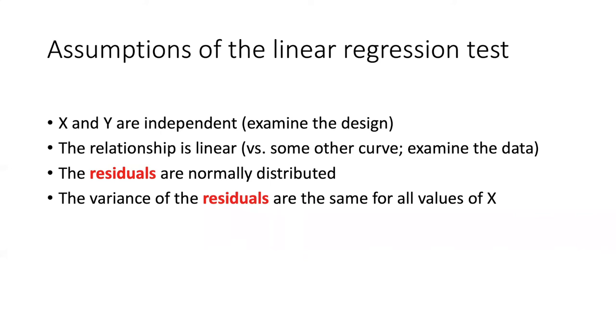There are four assumptions of a linear regression test. The first is similar to what we saw in the t-test. We have to meet the assumption that x and y are independent, and there's not really any easy way to determine that from the data themselves, but rather we have to think about the design of the experiment or the nature of the relationship as we talked about when thinking about what was going on with the flowers.